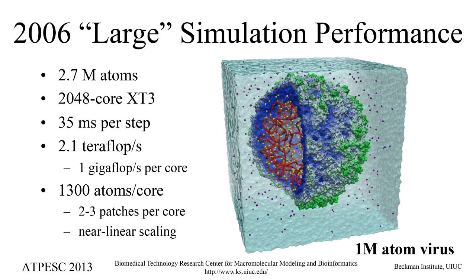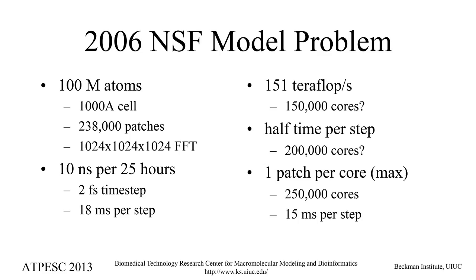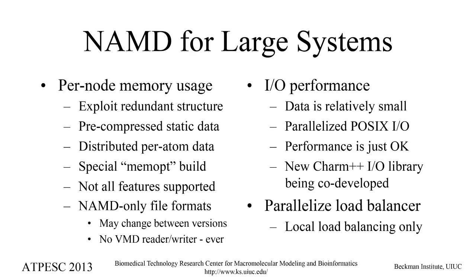Back in 2006, our large simulation was a million-atom virus simulation — the first simulation of an entire life form, depending on your definition. We had been working up to the ribosome at about 2.7 million atoms, running on an entire Cray XT3 with a certain level of performance per core. Then the NSF came out with the sustained petascale computing environment proposal that eventually became Blue Waters, and one of its acceptance tests specified a NAMD simulation of 100 million atoms at a given level of performance — twice as fast as we were running at the time.